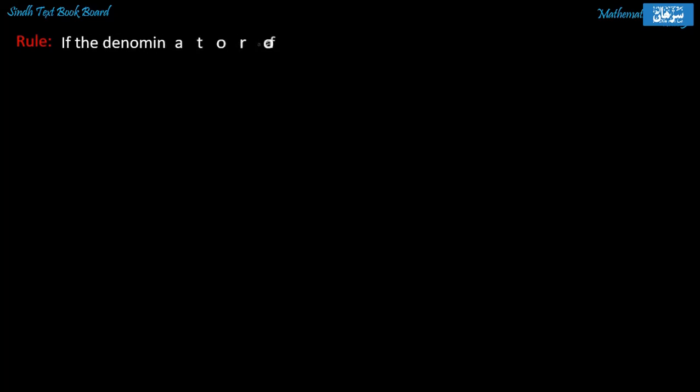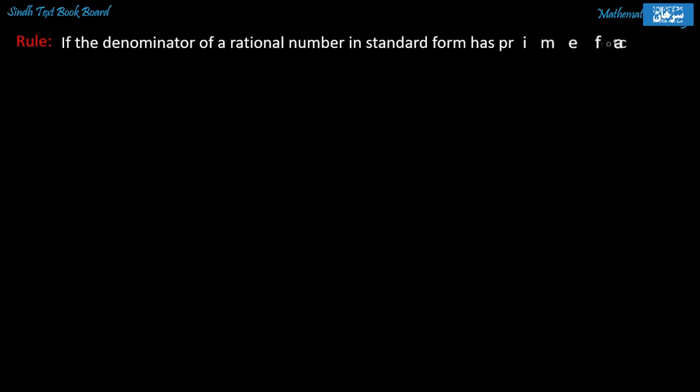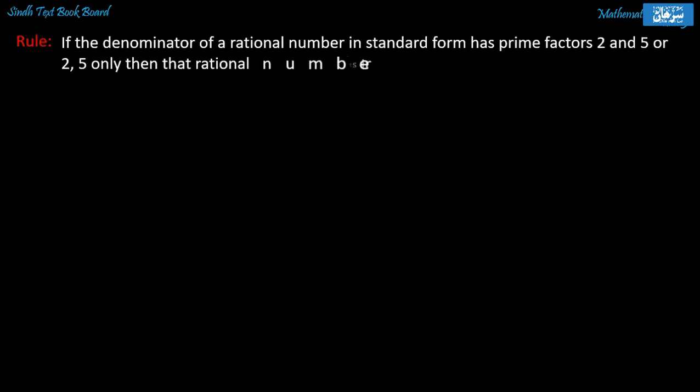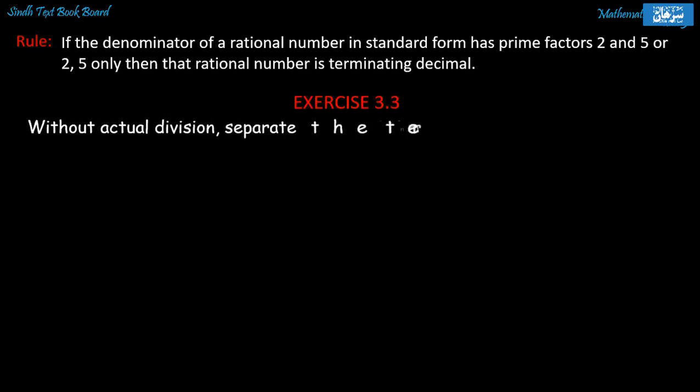In the name of Allah the most gracious and the most merciful. Before solving exercise 3.3, let us look at the rule: if the denominator of the rational number in standard form has prime factors of 2 and 5, or 2 and 5 only, that rational number is a terminating decimal. This rule will be clearly understood during the solving of exercise 3.3, so let us start without any delay.